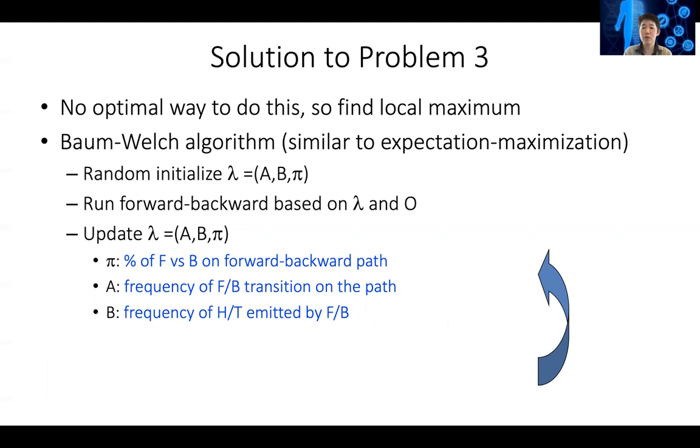So there are some solutions that can get you some good result, but there's no guarantee to get the global optimal. That's the Baum-Welch method, which is kind of similar to the expectation maximization approach that we discussed in transcription factor motif analysis.